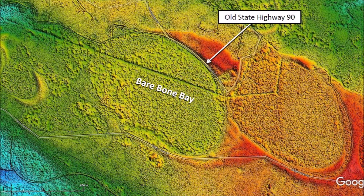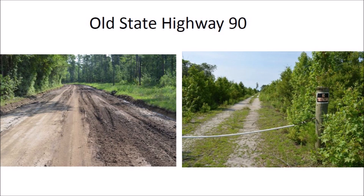Old State Highway 90 goes along the rim of Bare Bone Bay. When I first went exploring the Carolina Bays in 2014, I thought how convenient these roads would make exploration. The reality was very different — Old State Highway 90 is just a sandy road that gets very muddy and slippery after rain. If you are going to explore the Carolina Bays, you better take a four-wheel drive vehicle. Also, many of the roads by the bays are marked as private property or blocked with chains, cables, and no-trespassing signs.